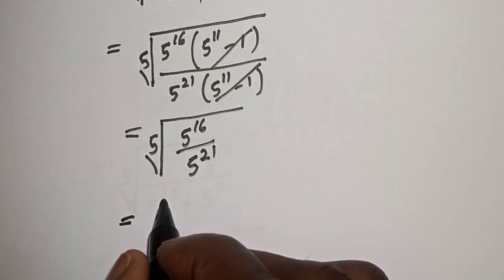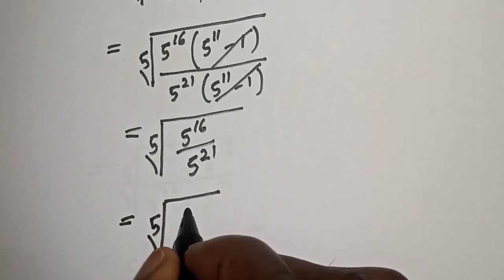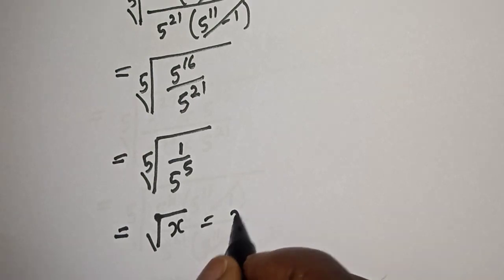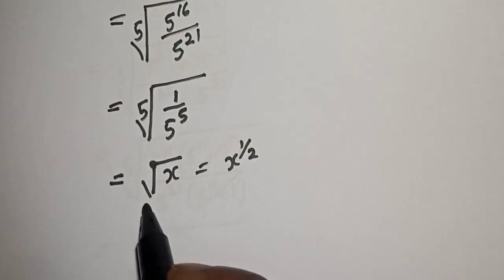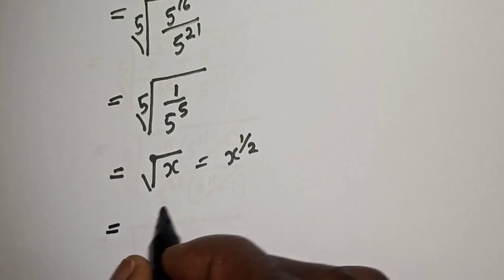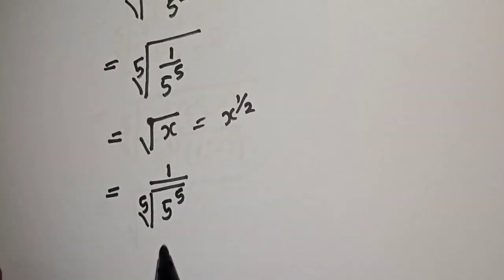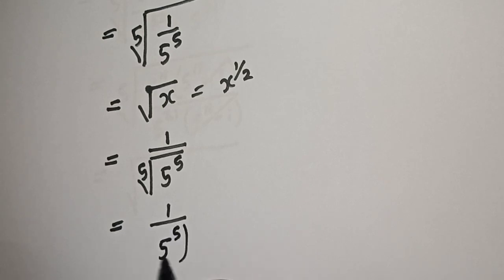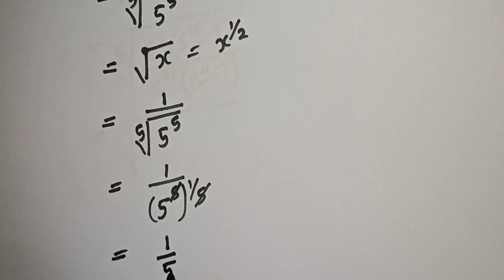This equals 5th root of 1 over 5 raised to power 5, since dividing gives 1 over 5 raised to power 5. Note that if you have square root of x, this is equal to x raised to power 1 over 2. Therefore, 5th root of 1 over 5 raised to power 5 can be written as 1 over 5 raised to power 5, to the power of 1 over 5. We cancel the 5s, so this equals 1 over 5.